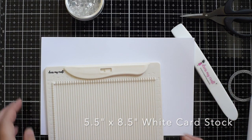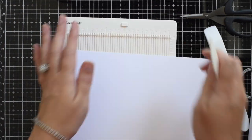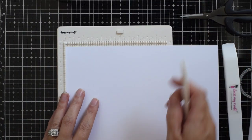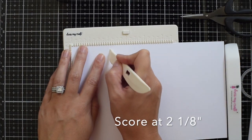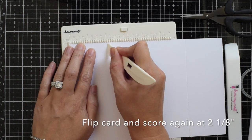We're going to start off with a five and a half inch by eight and a half inch piece of white cardstock. And we're going to score it at two and one eighth inch, and then flip it around and do the same thing on the other side.